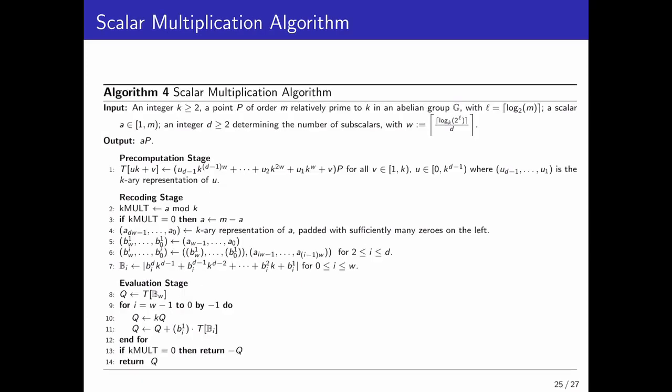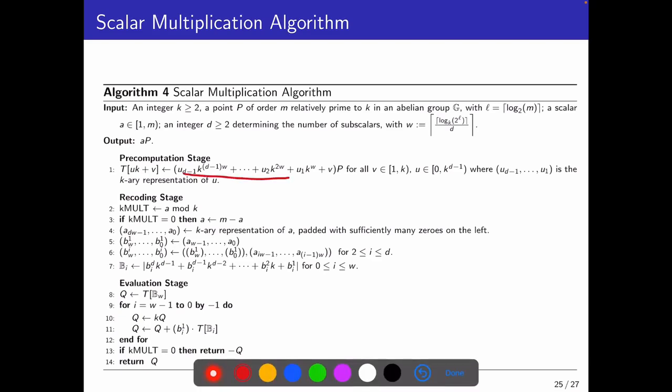So this is our scalar multiplication. In the precomputation stage, we compute and store these points. In recoding stage, we recode the scalars. And in the evaluation stage, each iteration, we perform a k multiplication and an addition with the precomputed points.